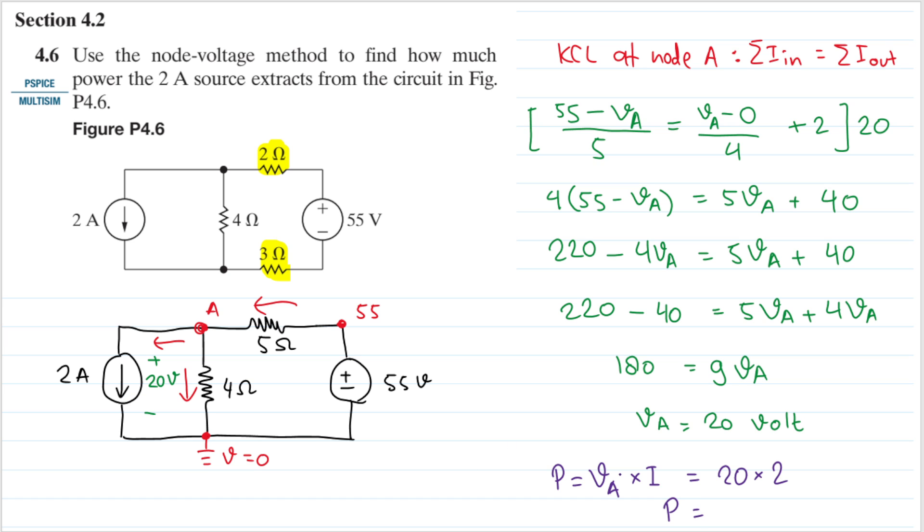The VA is 20 and then the current here is 2 amperes. Therefore, the power extracted by this current source is 40 watts. This is the final answer.